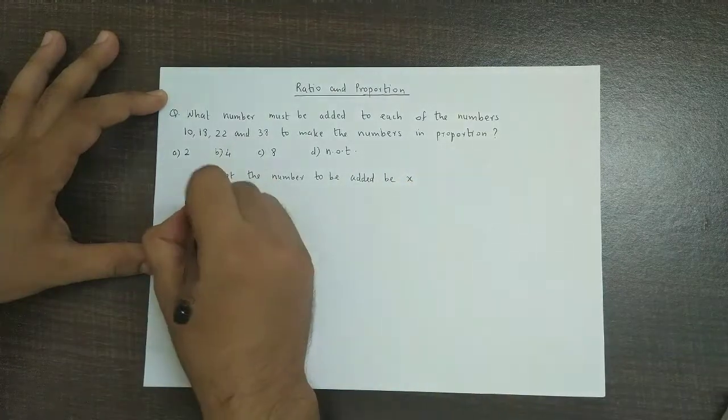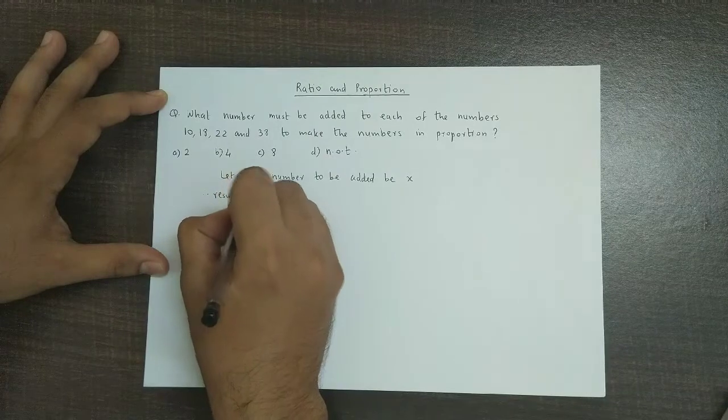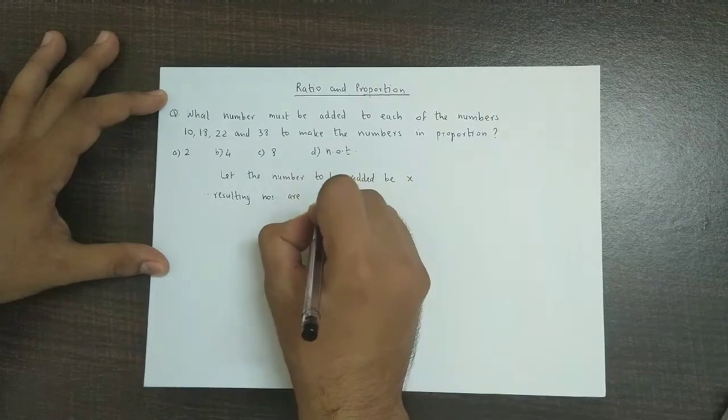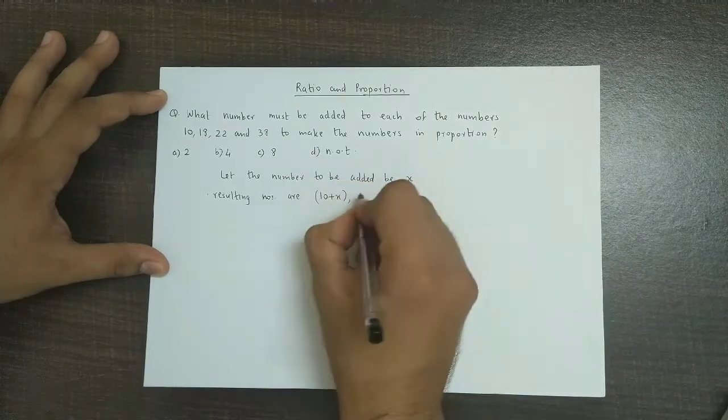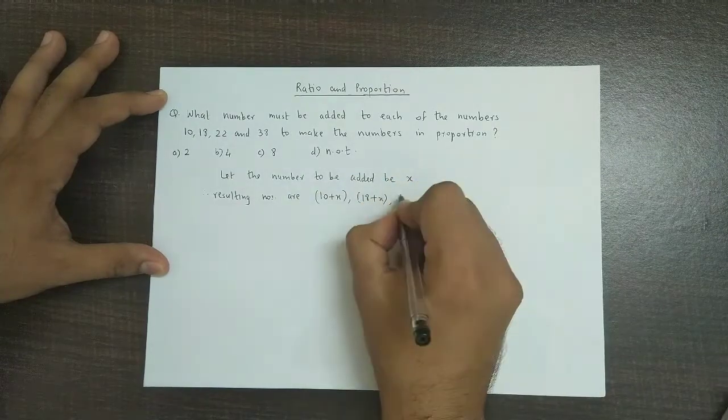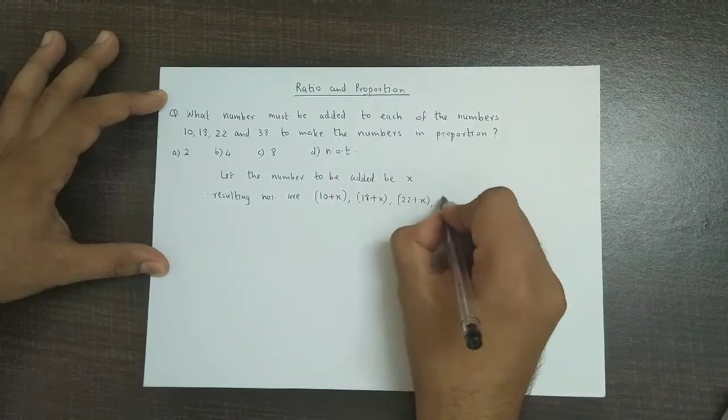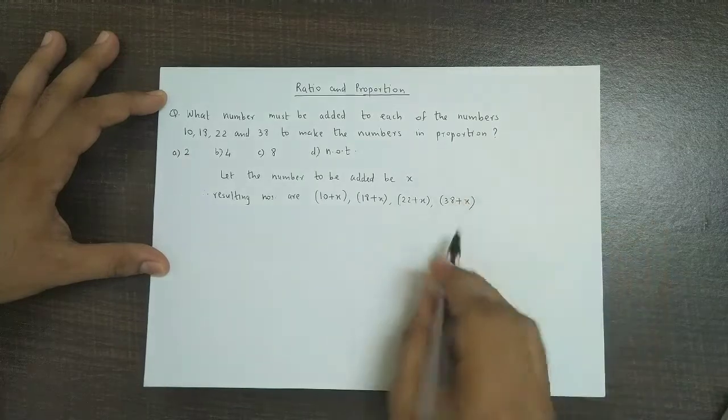Therefore the resulting numbers are 10 plus x, next is 18 plus x, next would be 22 plus x, and the last number would be 38 plus x.